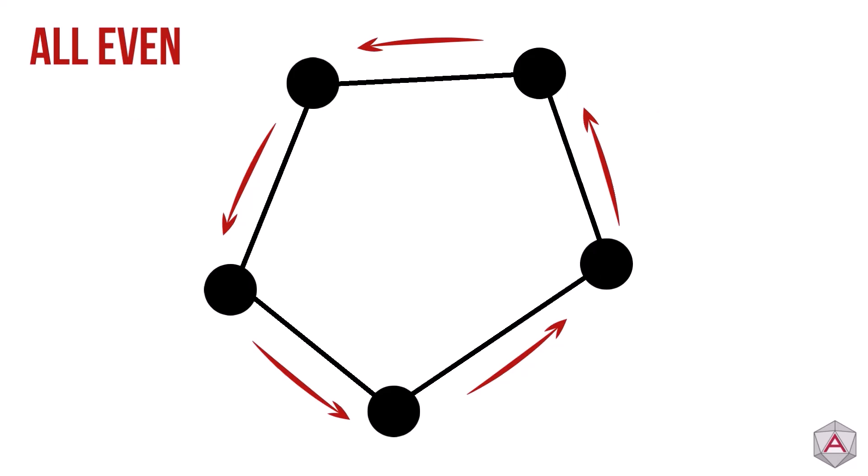If we take a graph with all even edges, it doesn't matter where you start on that graph, there will always be a way to cross every edge just once.